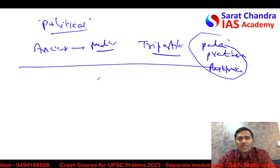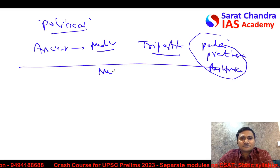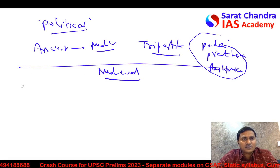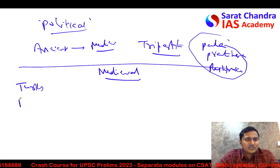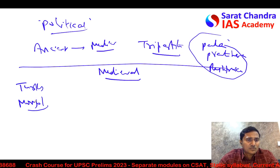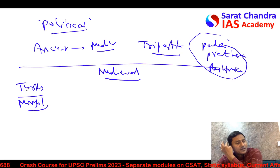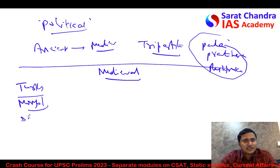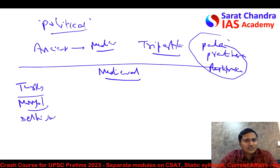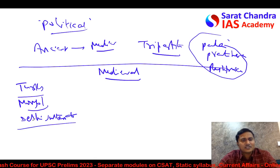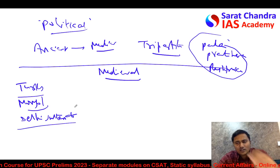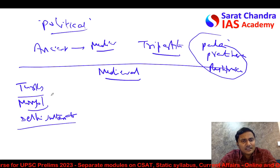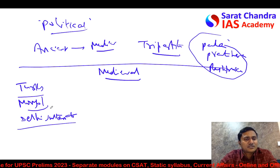Coming to medieval history: the advent of the Turks, and even these days there were questions on the Mongols — their politics, important Mongol kings, and who among them came close to India. Then the Delhi Sultanate — as I told you, don't focus much on political history; focus on important socio-cultural changes, differences in art and literature, market reforms, or experiments done by certain kings.